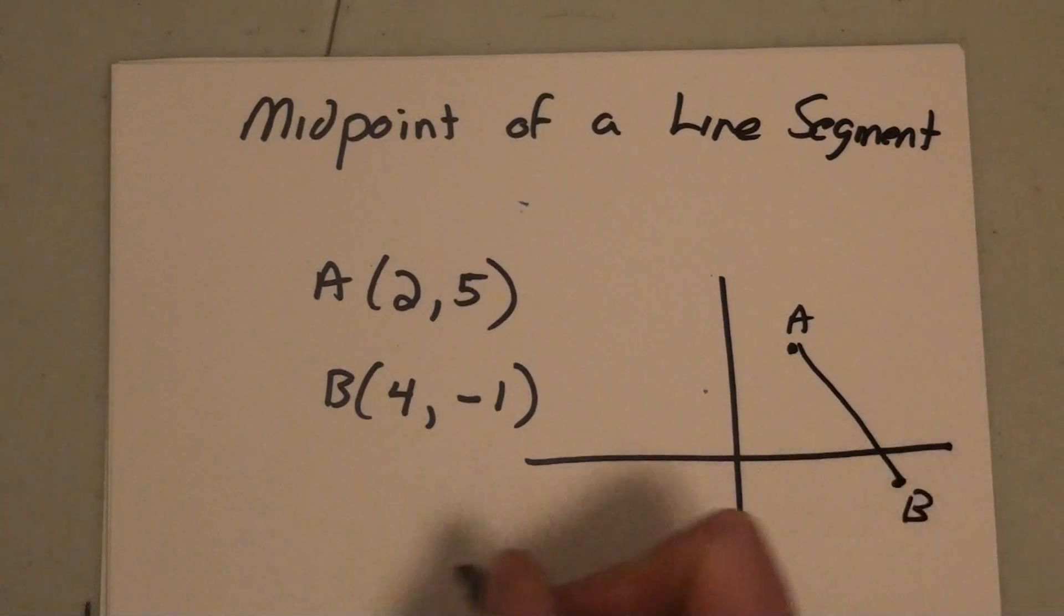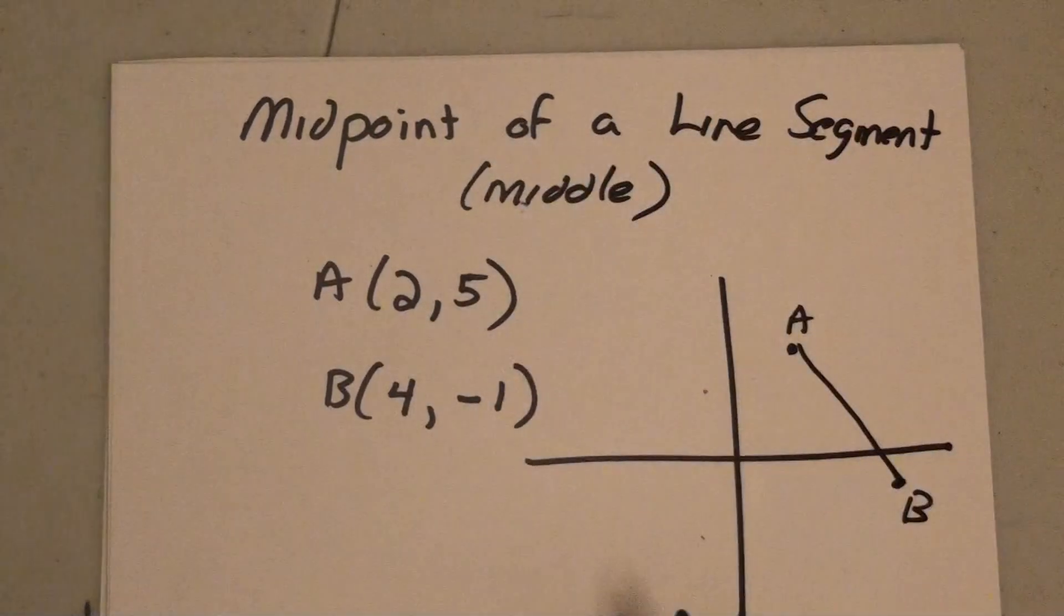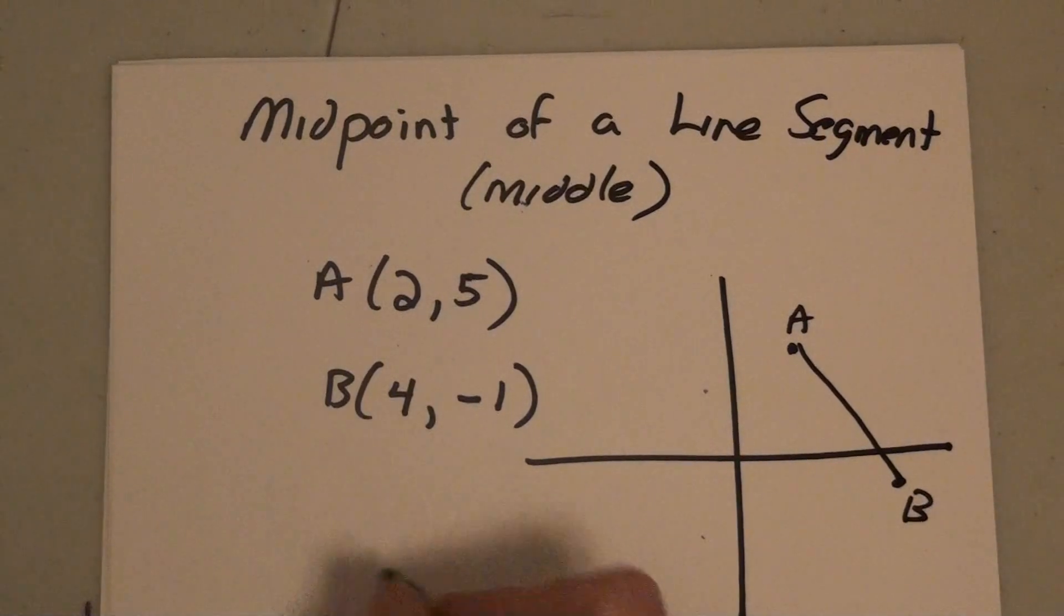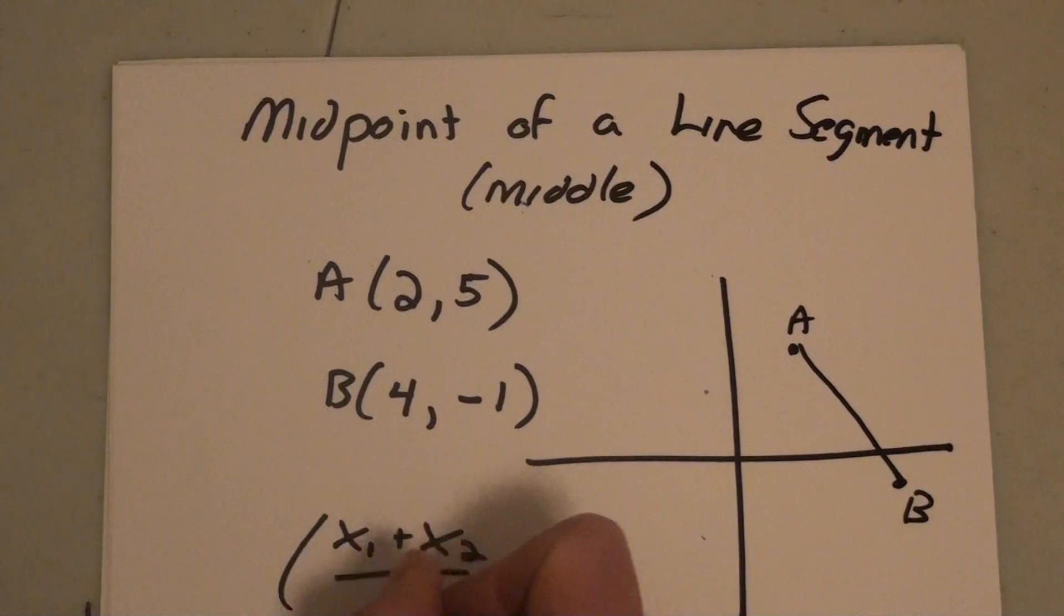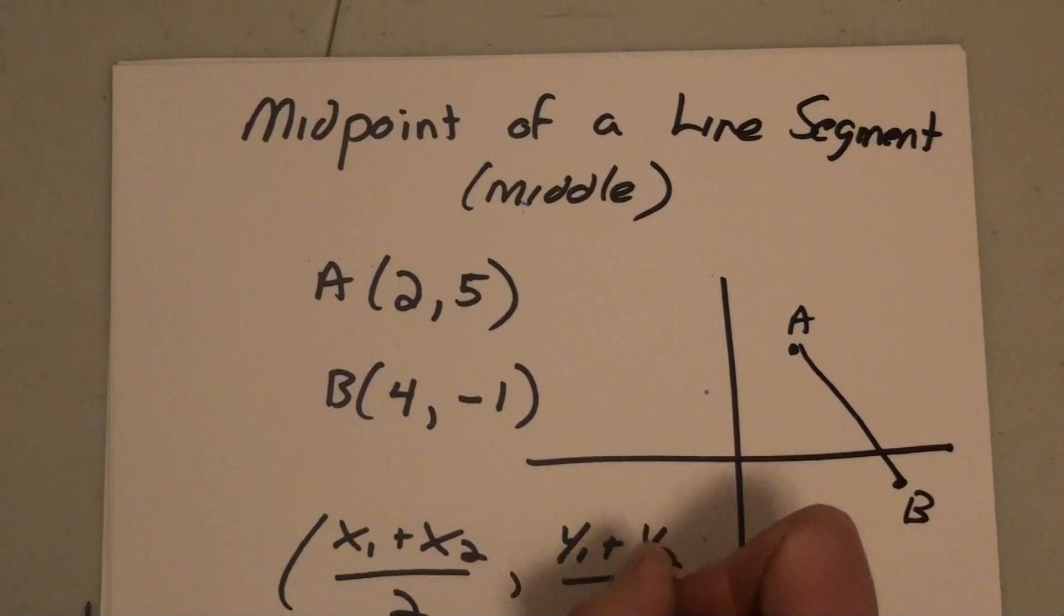So it's a line segment and I want to find the midpoint of the line. The midpoint of a line is kind of like the middle of the line. What I want to do is follow the formula: x1 plus x2 divided by 2, comma, y1 plus y2 divided by 2.